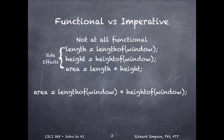Here's another way to write the same code, which would still look right at home in a Java program. In this case, we aren't storing the intermediate values for length and height. We're just immediately using them within another expression. This is kind of functional, but we still have an assignment and a side effect.